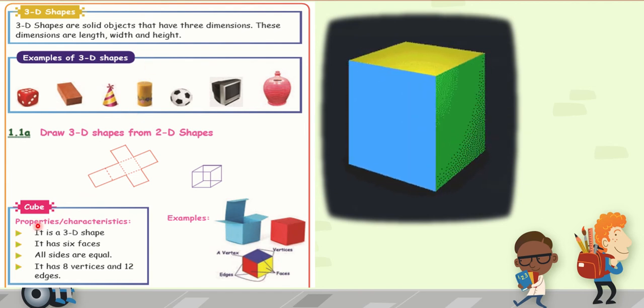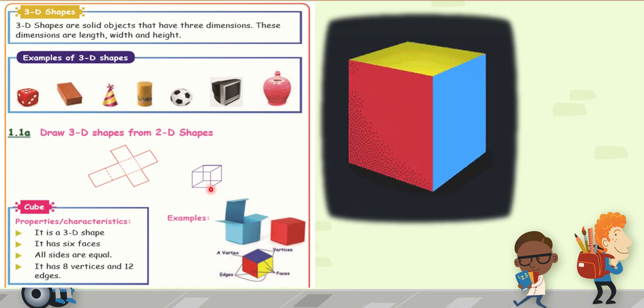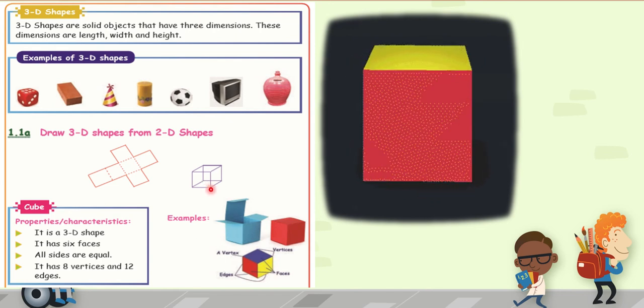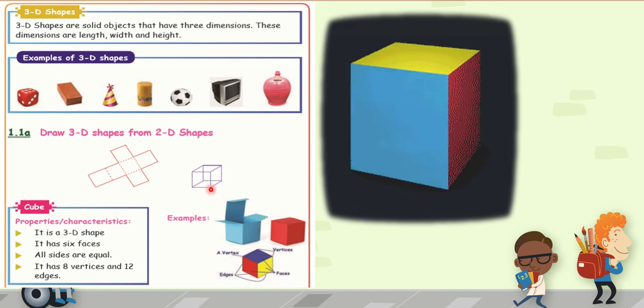So first one is cube. Cube is, an example for cube is, snake and ladder playing dice. That is an example for cube. Then look at the cube.